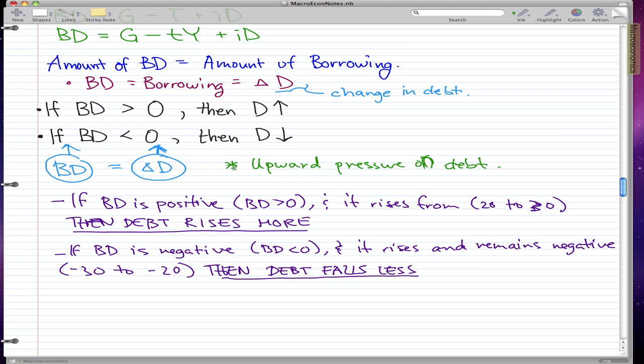This implies that there's an upward pressure in debt. When we have an upward pressure in debt, if BD is positive and it rises, then debt rises more. And if it's negative and it rises but still remains negative, then the debt falls less. This is just an upward pressure on debt.